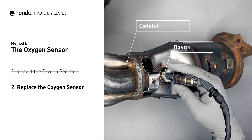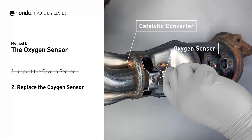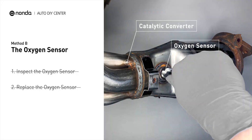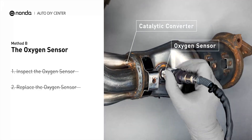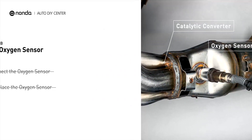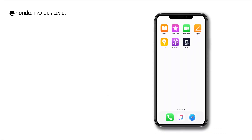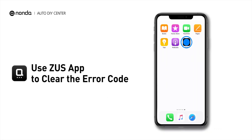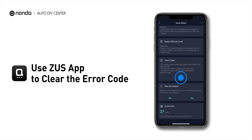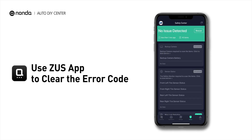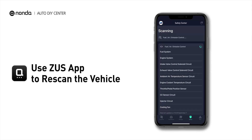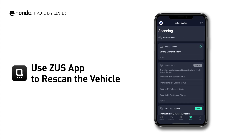If damages are found, then replace the oxygen sensor. So here are two of the most practical solutions to fix the P015C error code. After the repair, you can now use the Zeus app to clear the error code, and tap the Rescan button one more time to make sure everything is fine with your vehicle.